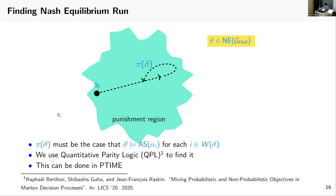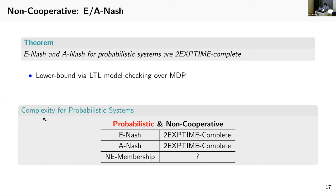To find such a run, first we find some punishment region. We need to find some run inside this region because inside this region, every deviation can be punished. The run must be the case that the run satisfies the goal of each winning player, those that cannot be punished. Finding such a run can be done by quantitative parity logic, and it can be done in polynomial time. So in total, we have a double exponential time procedure.